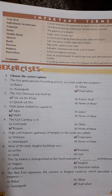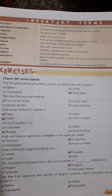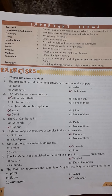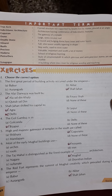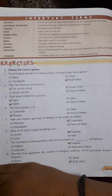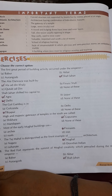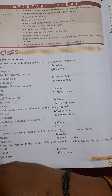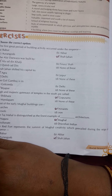First one, choose the correct option. The first great period of building activity occurred under the emperor — answer is Shahjahan, 1D. The Alai Darwaza was built by Alauddin Khilji, 2A. Number 3: Shahjahan shifted his capital to Agra, 3A. Number 4: The Gol Gumbaz is in Bijapur, 4C. Number 5: The high and majestic gateways of temples in the south are called Gopurams, 5B.